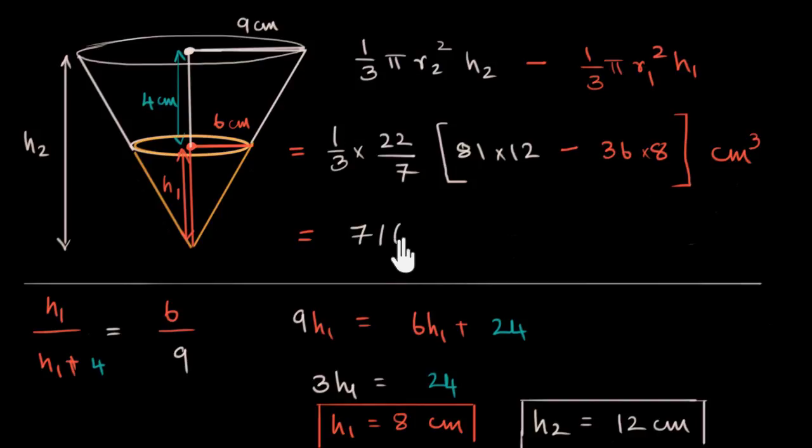716 centimeters cubed, which is another word of saying about 716 ml—centimeter cube is the same as milliliters—or 0.72 liters. So it's under a liter, about 750 ml is the volume that we got for this. So it's not really a bucket, it's probably a tumbler, a large one.